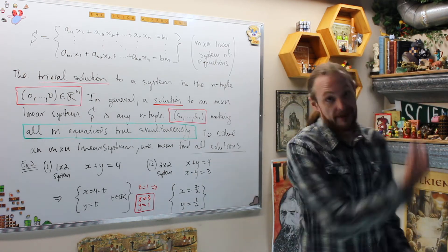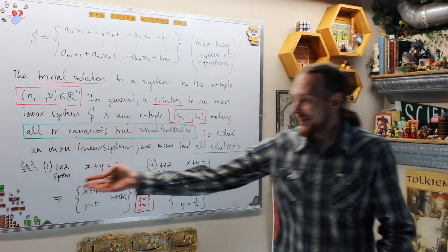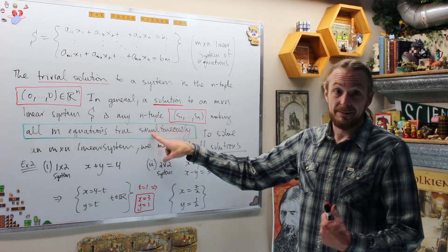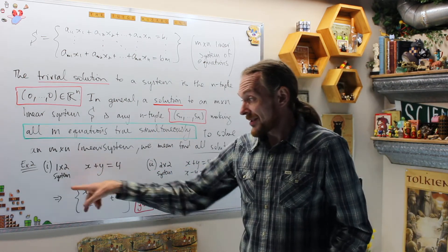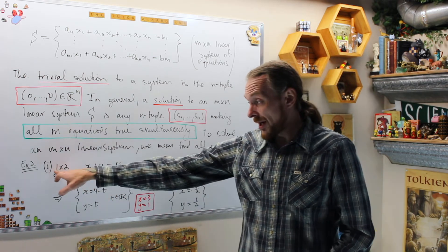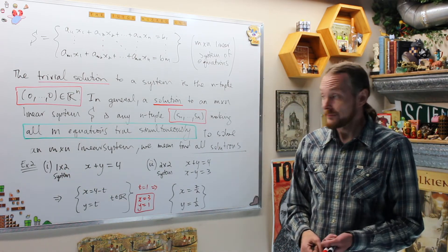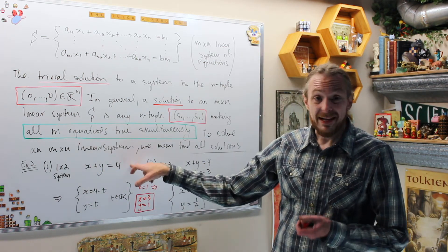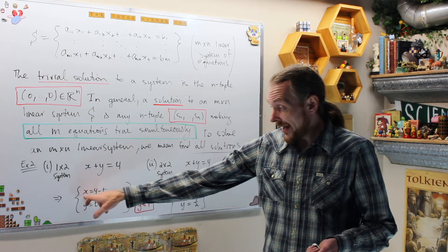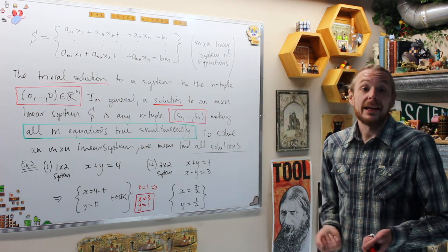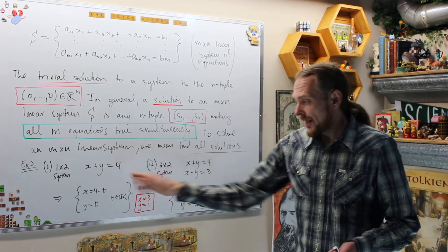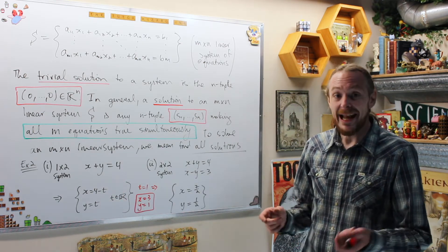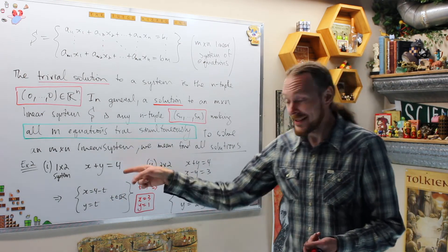This is a one by two system — one equation and two unknowns. It has infinitely many solutions because we can't narrow down both variables: we move y to the other side, call y free, and then x depends on y. Every point on that line is a solution to this equation. You can pick any real number — even pi or e — and it will solve it.